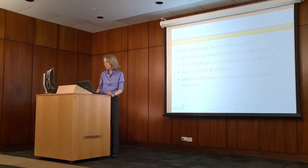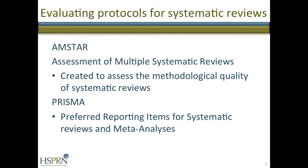There are two commonly used protocols to evaluate literature reviews. These are AMSTAR, which is the Assessment of Multiple Systematic Reviews, and PRISMA, which stands for Preferred Reporting Indicators for Systematic Reviews and Meta-Analyses.